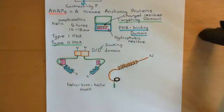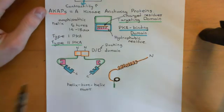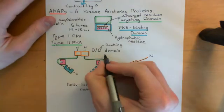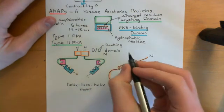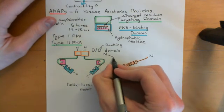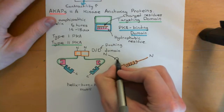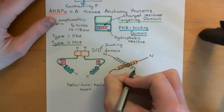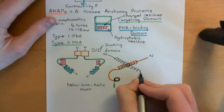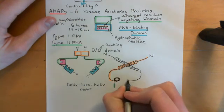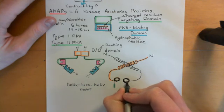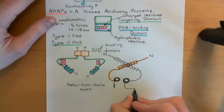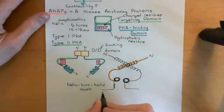The second regulatory subunit's dimerization and docking domain has its amino terminus on the opposite side. Its alpha helix will be intertwined with the first one, then it will have its turn coming down, followed by another helix going into the plane, and then it will go down into the linker.